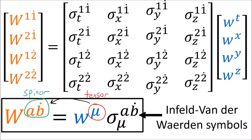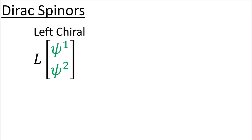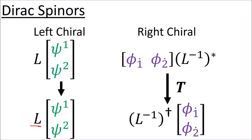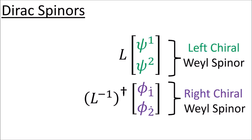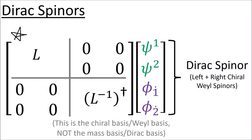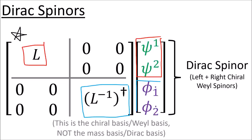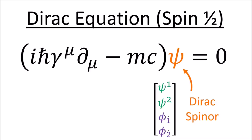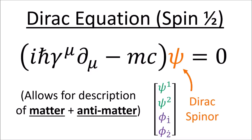The last topic is Dirac spinors. When dealing with spin-1/2 particles in special relativity, we need to track both left chiral and right chiral spinors. Writing them both in column notation, they follow two different Lorentz transformation rules. Stacking them into a four-component column gives a Dirac spinor, transformed by a 4x4 block-diagonal matrix — the upper 2x2 block transforms the left spinor and the lower 2x2 block transforms the right spinor. Dirac spinors appear in the Dirac equation, and including both left and right Weyl spinors allows description of both matter and antimatter spin-1/2 particles.